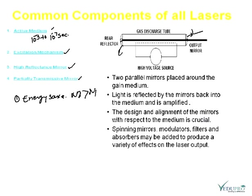The rough structure you can see: high voltage source. Two parallel mirrors placed around the gain medium. Light is reflected by the mirrors back into the medium and is amplified. The design and alignment of the mirrors with respect to the medium is crucial. The spinning mirrors, modulators, filters, and absorbers may be added to produce a variety of effects of laser system.